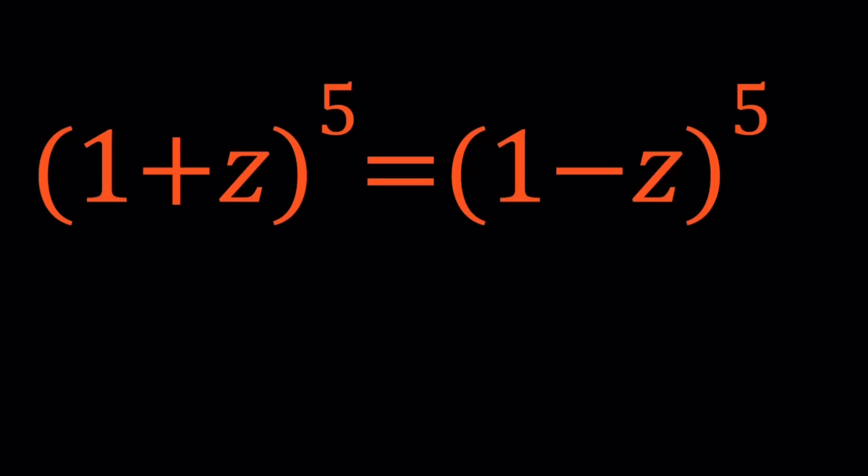Why did we call this z instead of x? You'll see in a little bit. So I'm going to look at it from a very simplistic perspective. We have 5th powers on both sides, so why don't we just 5th root both sides? That's going to give us 1+z = 1-z.